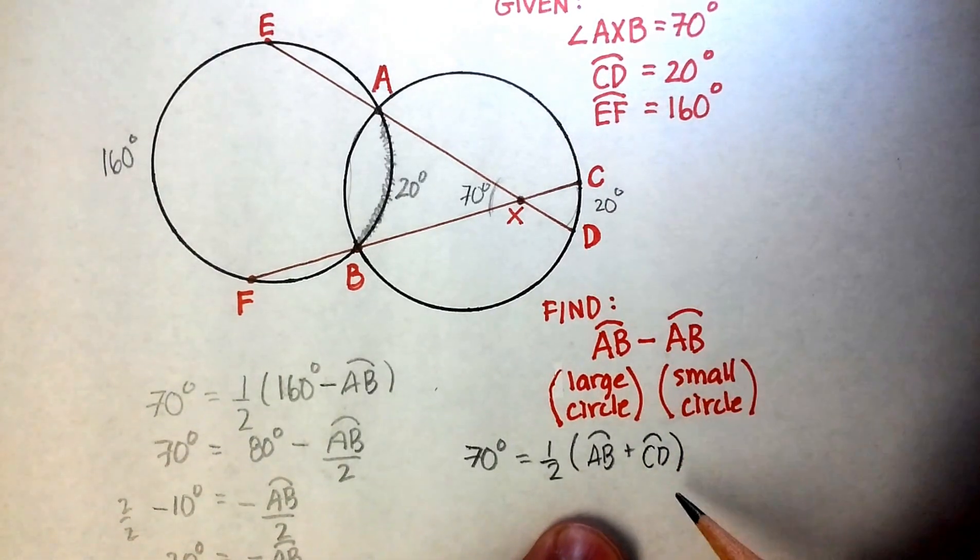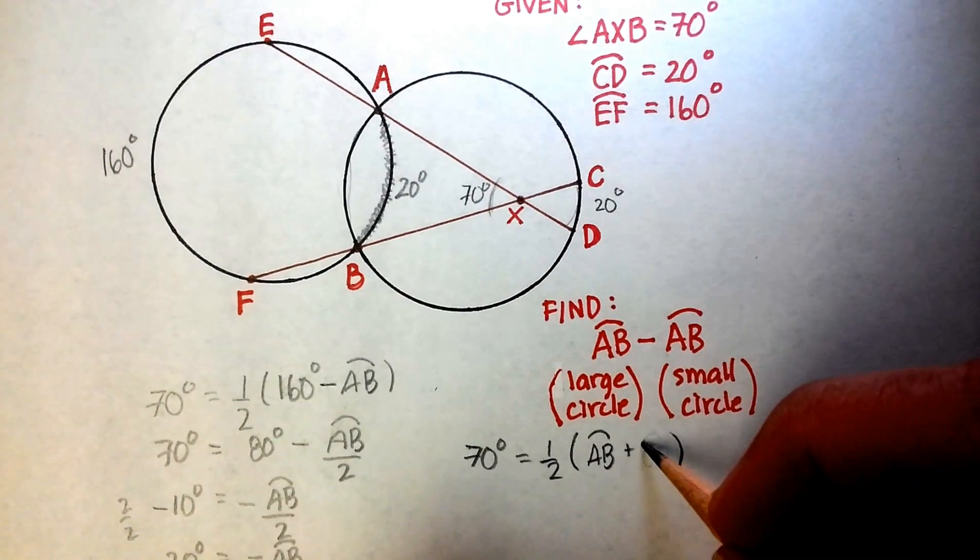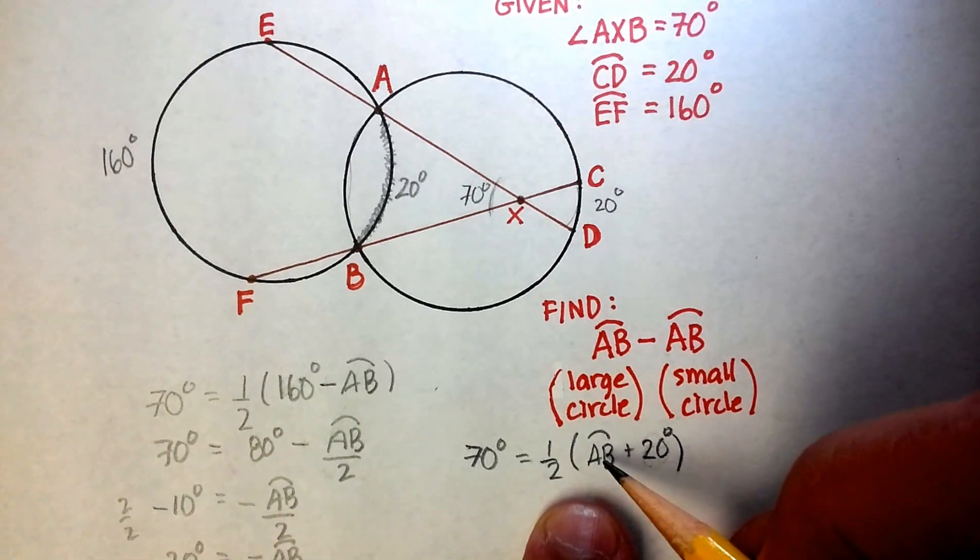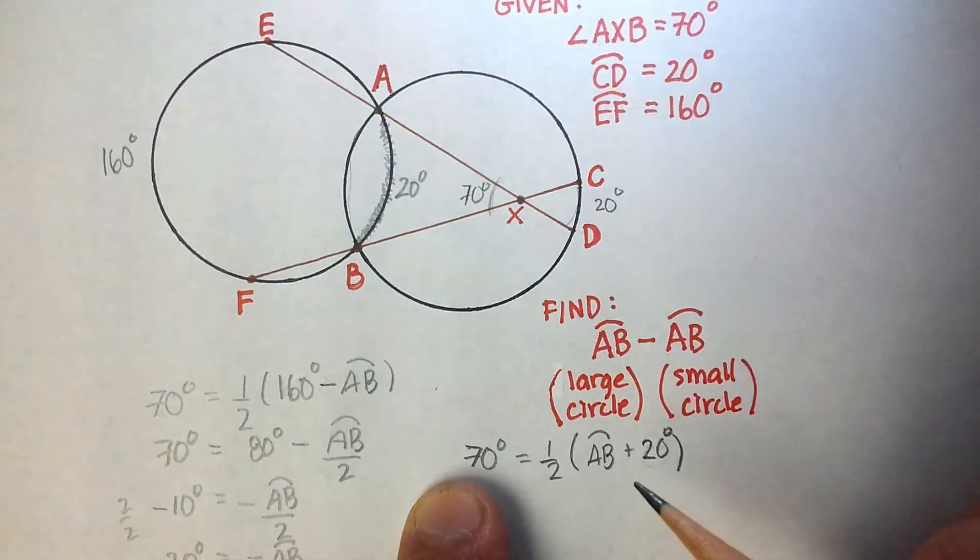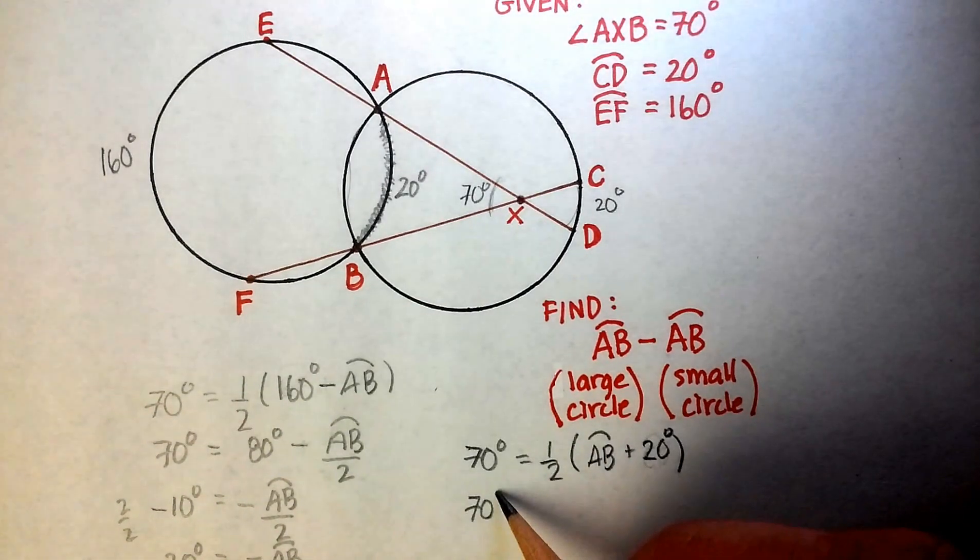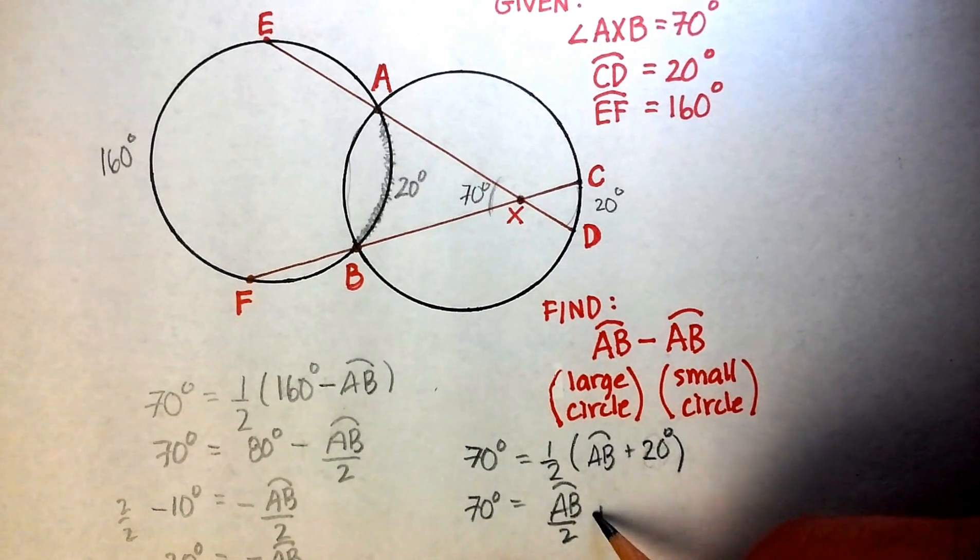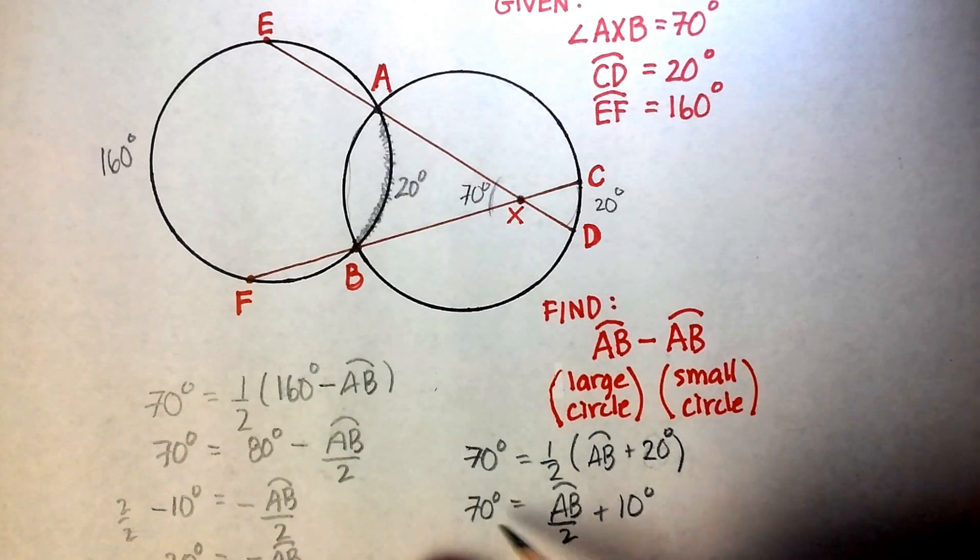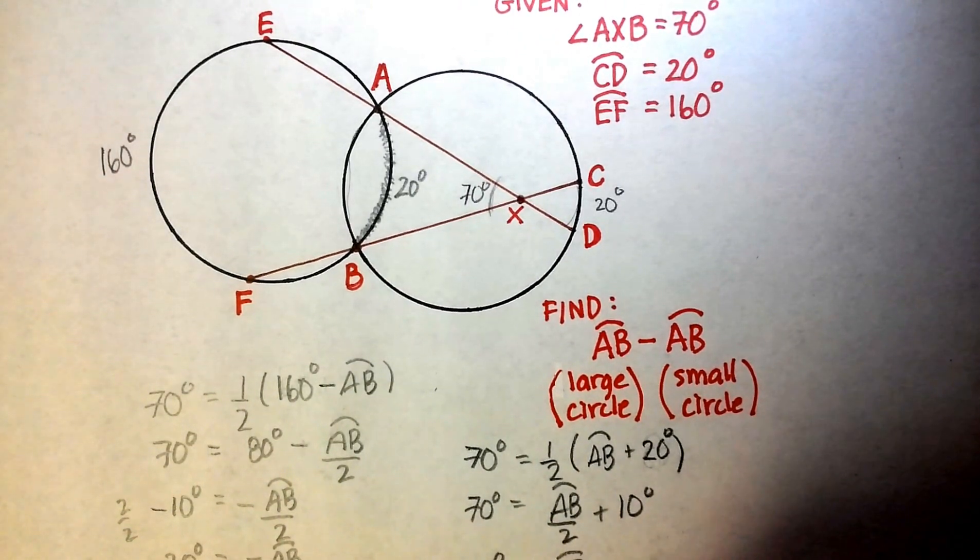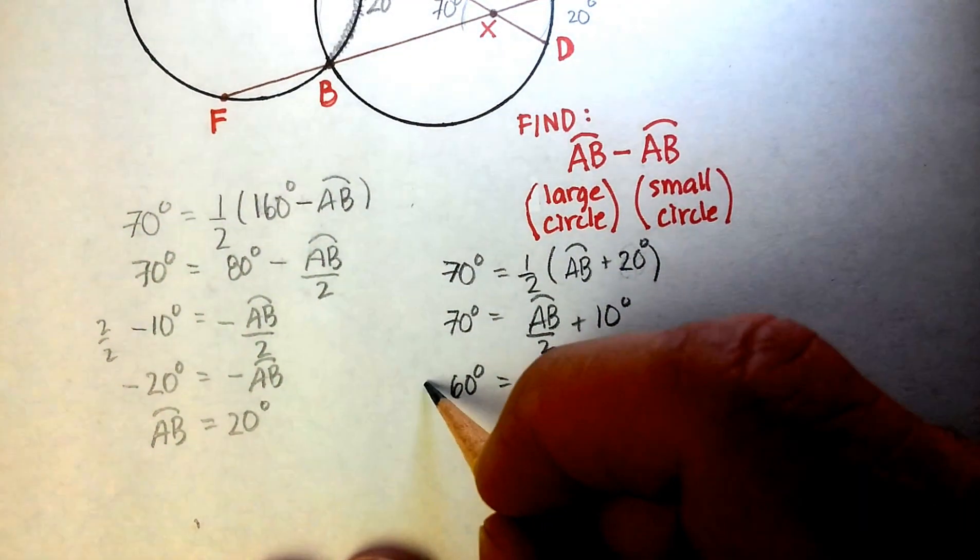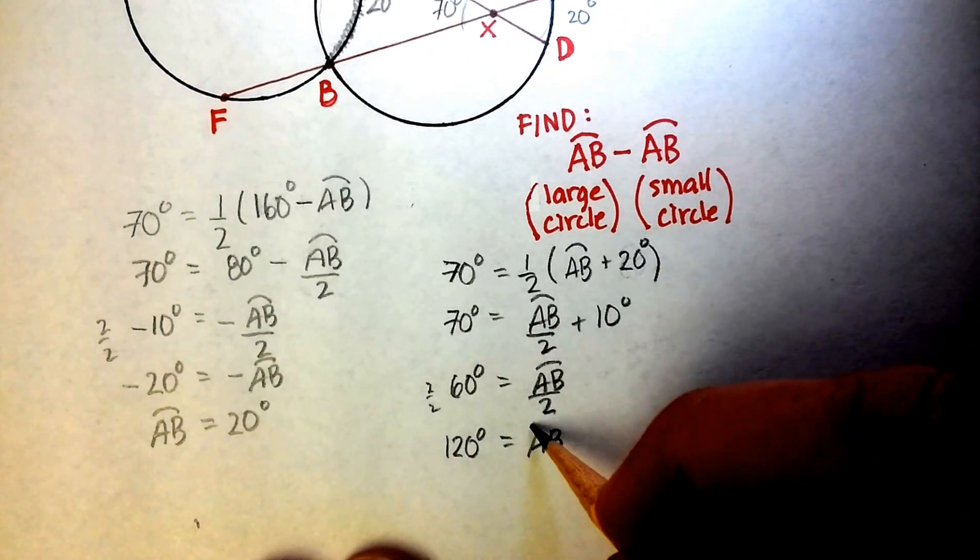Now, we do already know what arc CD is, and that was given to us as 20. So let's go ahead and substitute. And once again, you've got one variable left. And this is going to be the arc of this circle right here. So let's go ahead and distribute. You get 70 degrees is equal to one-half the arc AB plus one-half times 20 is 10. Subtract that over there. You're going to get 60 is equal to one-half the measure of the arc AB. Let's multiply this side by 2, cross out the denominators, and you get 120 is equal to the arc AB.